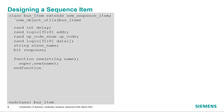In UVM, we use the term transaction and sequence item pretty much interchangeably. But strictly speaking, we use the UVM sequence item type as the base class for transactions, because this class includes hooks for the transaction to be used by sequences. In order to use the sequence item properly, we extend from the UVM sequence item, register it with the factory using the UVM object utils macro, and then define all of the information necessary in that sequence item to communicate whatever we need to communicate from one component to another.